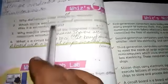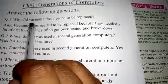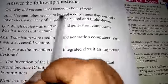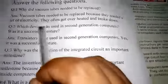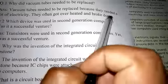Book answer questions. Why did vacuum tubes need to be replaced? Vacuum tubes needed to be replaced because they required a lot of electricity. They often got overheated and broke down.